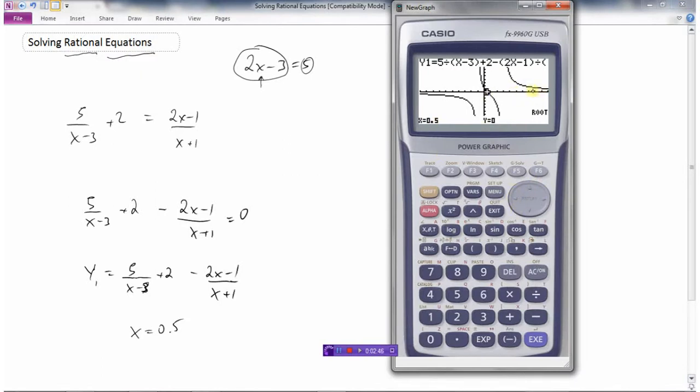So as we move to the right forever and to the left forever, the x-axis becomes our asymptote.